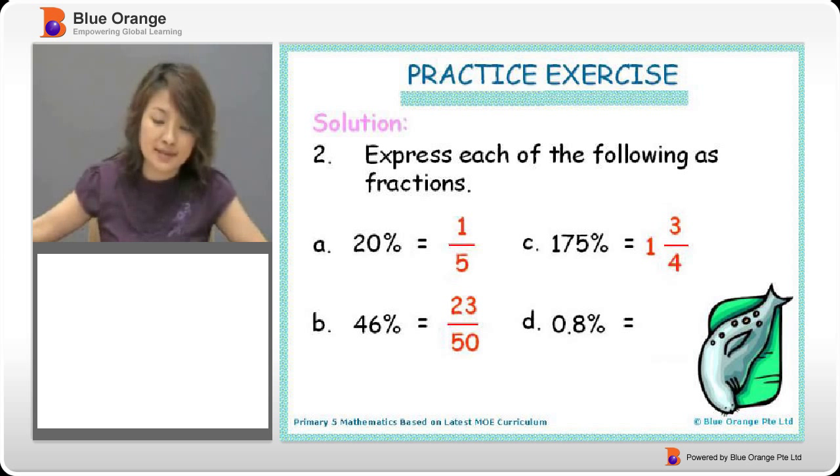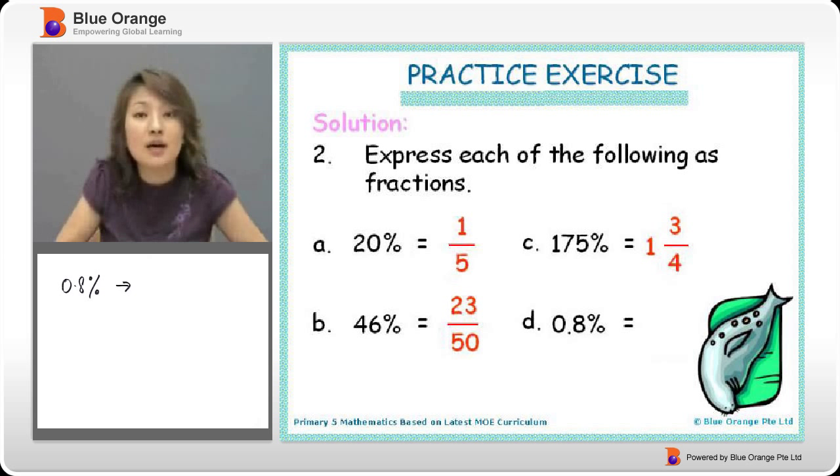And what about 0.8%? 0.8%. We have to change it to 0.8 over 100. And then in this case, we don't want to have any decimal in a fraction, right? So let's try and get rid. To get rid of this decimal, we must times 10.